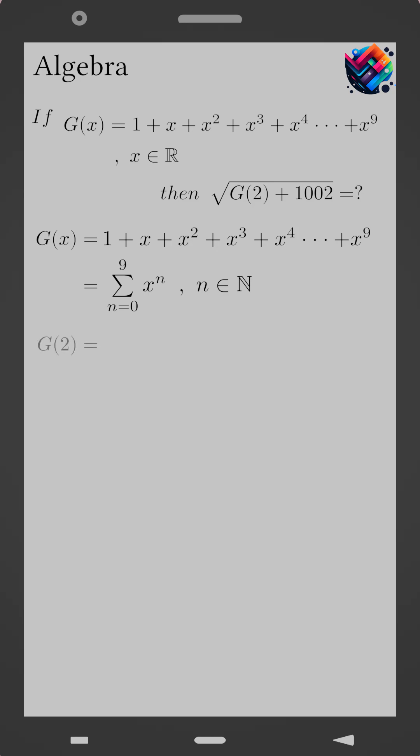Now substitute x equals 2. G of 2 equals the sum from 0 to 9 of 2 to the power n. This gives 1 plus 2 plus 4 and so on up to 512.